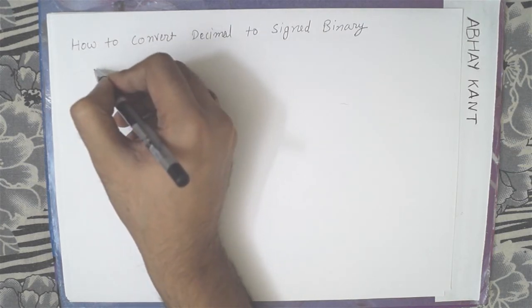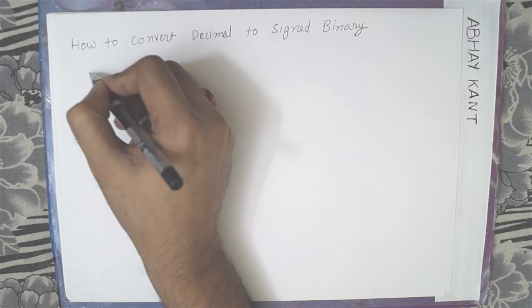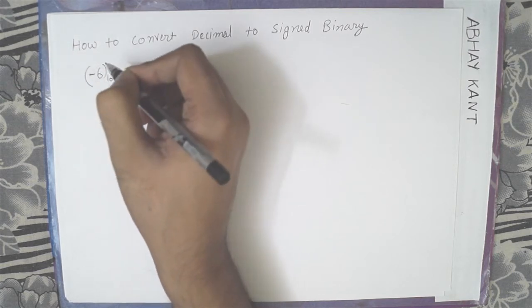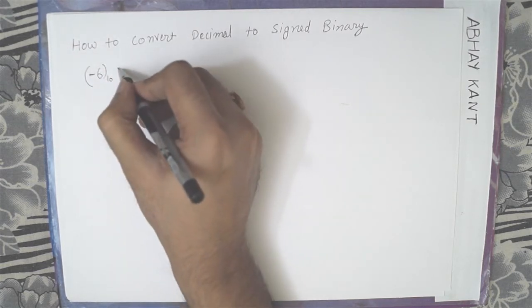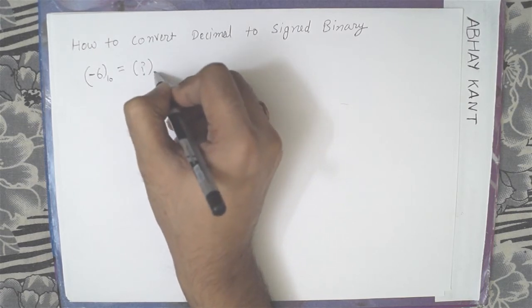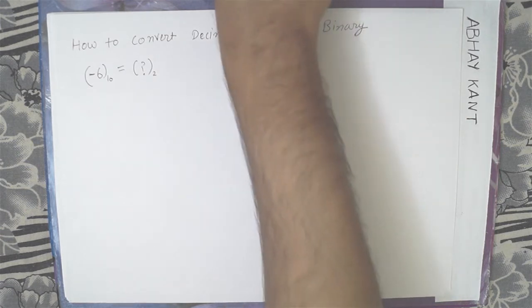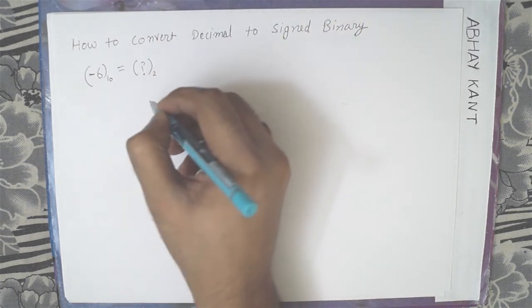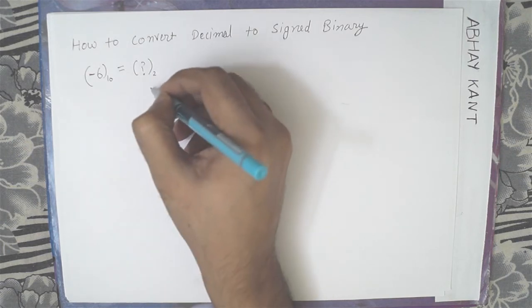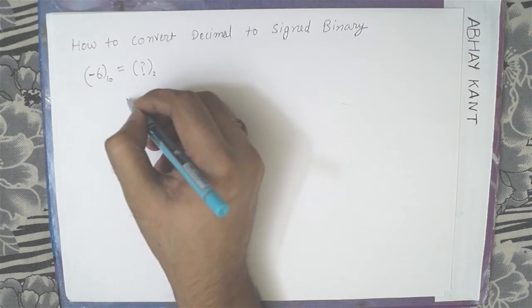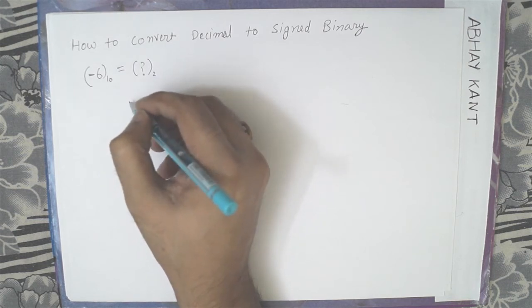Let's say we have a number 6, negative 6 in decimal. How do we represent it in binary, signed binary? So the number is minus 6. So first of all we will represent this number in binary without the negative sign.